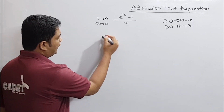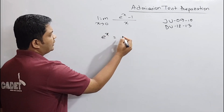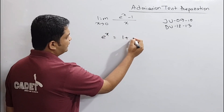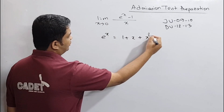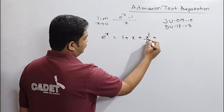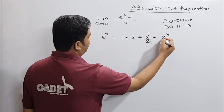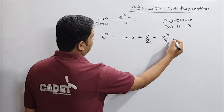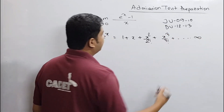e to the power x is equal to 1 plus x plus x squared by 2 factorial plus x cubed by 3 factorial, plus x cubed by 3 factorial, continuing further.